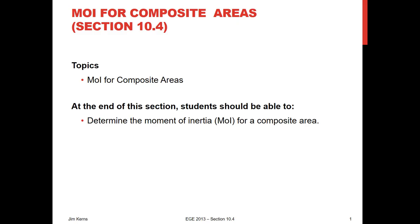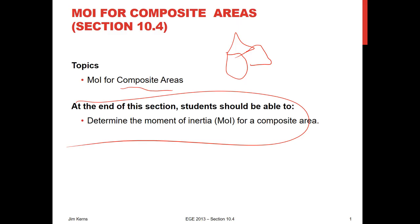Here we are again, and this time we're talking about section 10.4, Moments of Inertia for Composite Areas. Kind of like we did with centroids and centers of gravity, when we have composite areas — areas made up of simple shapes — we can use those shapes to avoid some of the math. And at the end of the section, you should be able to determine those moments of inertia.